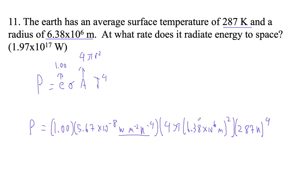I see 1 times 5.67 times 10 to the minus 8, times 4 times pi, times 6.38 times 10 to the sixth. We've got to square that, times a whopping 287 to the fourth. So it's not nothing. I'm getting 1.9677 times 10 to the 17th.